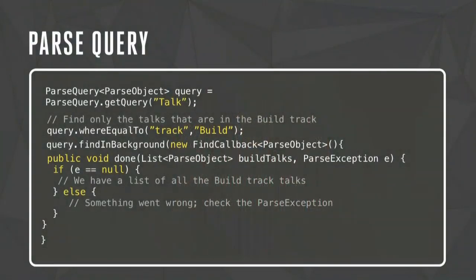That's getting data into Parse. To get data out, you can write a query. You create a ParseQuery object, specify which class you're searching over, and add constraints. In this case, we want to find talks where the track name equals Build. Then, just like calling saveInBackground() for a ParseObject, you call findInBackground() for a ParseQuery and get a list of ParseObjects back. We also support subclassing in iOS and Android, so if you want a strongly typed Talk class, you can write a ParseQuery for Talk and the objects returned can be used just like any other Java object — making everything type-safe inside your app.